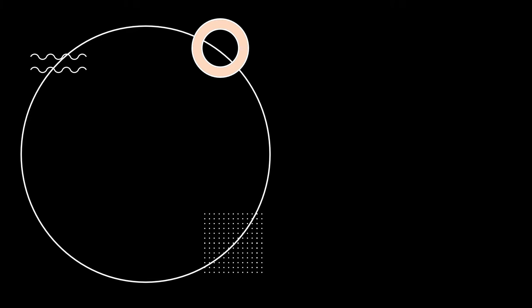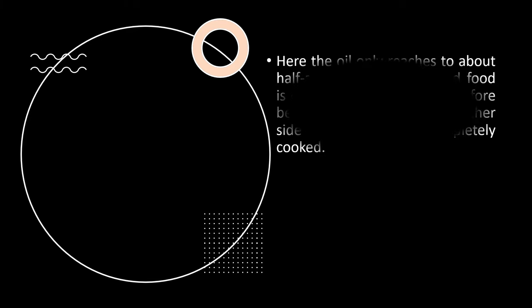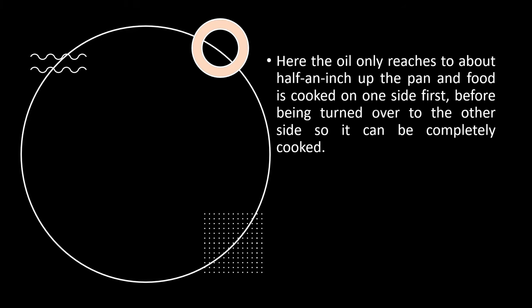Shallow-frying. In shallow-frying, the oil only reaches up to about half an inch up the pan and food is cooked on one side first, before being turned over to the other side so it can be completely cooked.